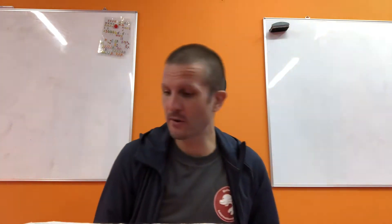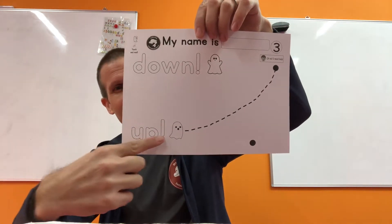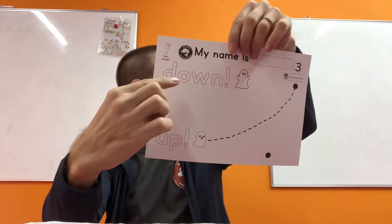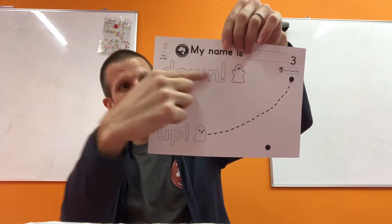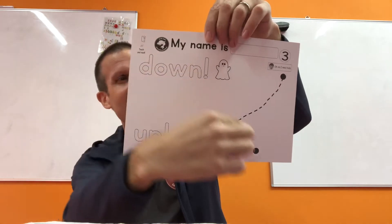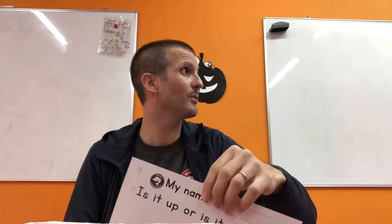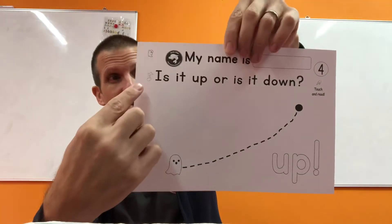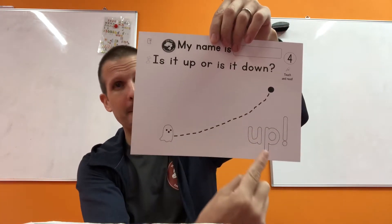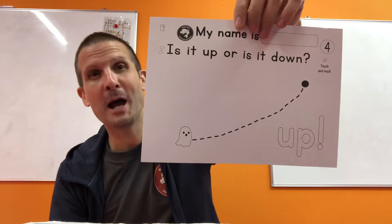All right, moving on to number three. Number three — uh-oh. It's going up! U-P is up. It goes up. And then the question: is it up or is it down? Now this ghost is flying. Remember that word again — U-P is up. Up, that's right. Up. You got it.